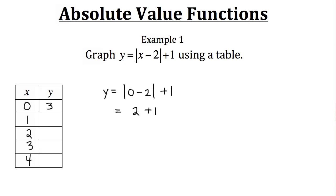Now let's try when x is 1. We have y equals the absolute value of 1 minus 2, plus 1. Now 1 minus 2 is negative 1, and the absolute value of negative 1 is positive 1. And then we still need to add the 1, so when x is 1, y equals 1 plus 1, or 2.